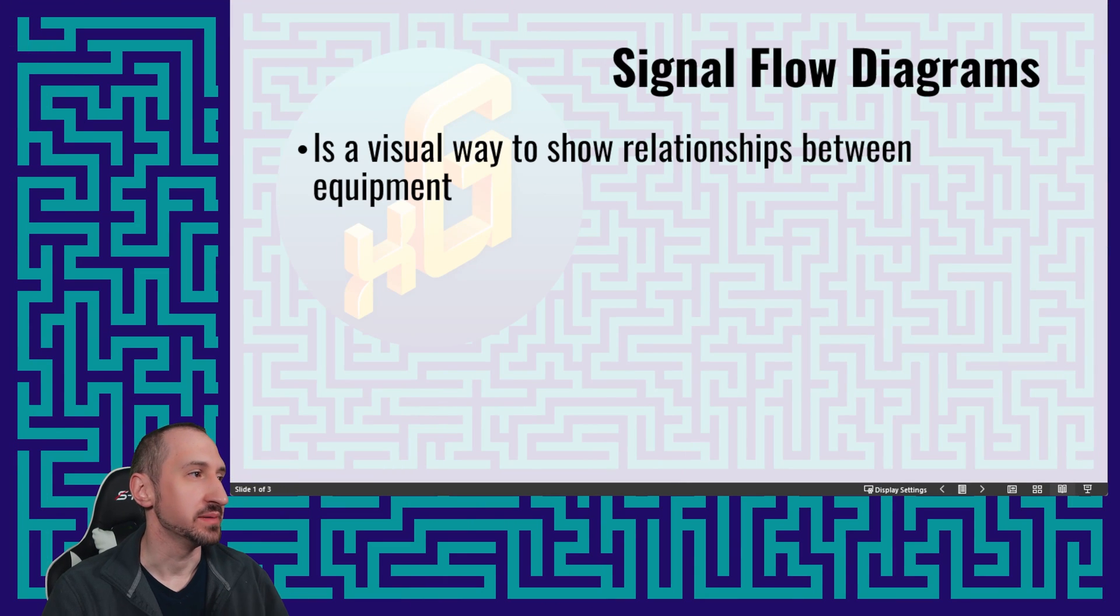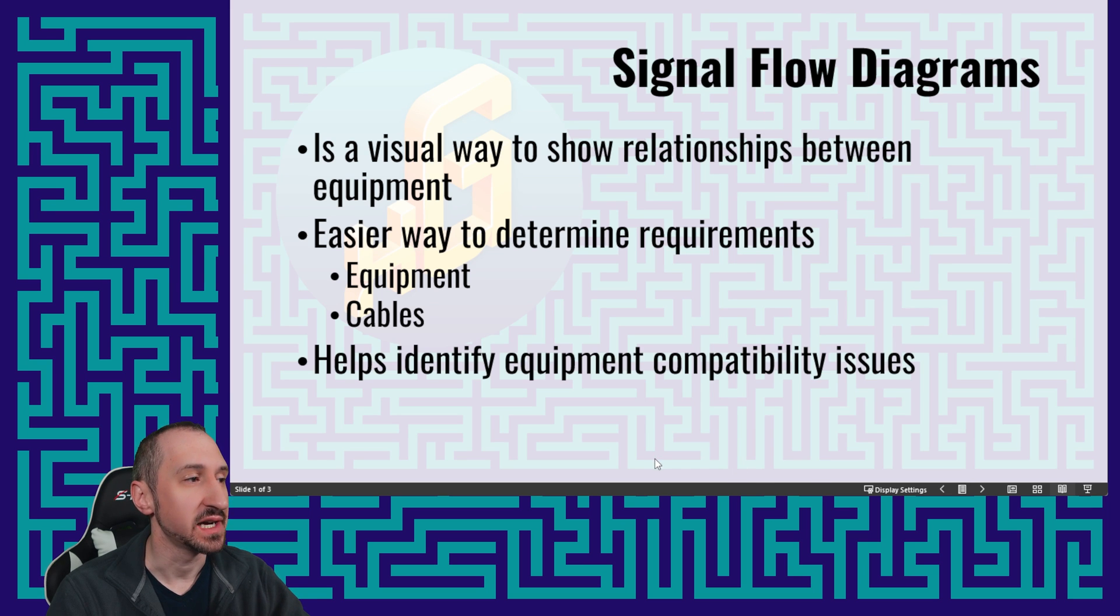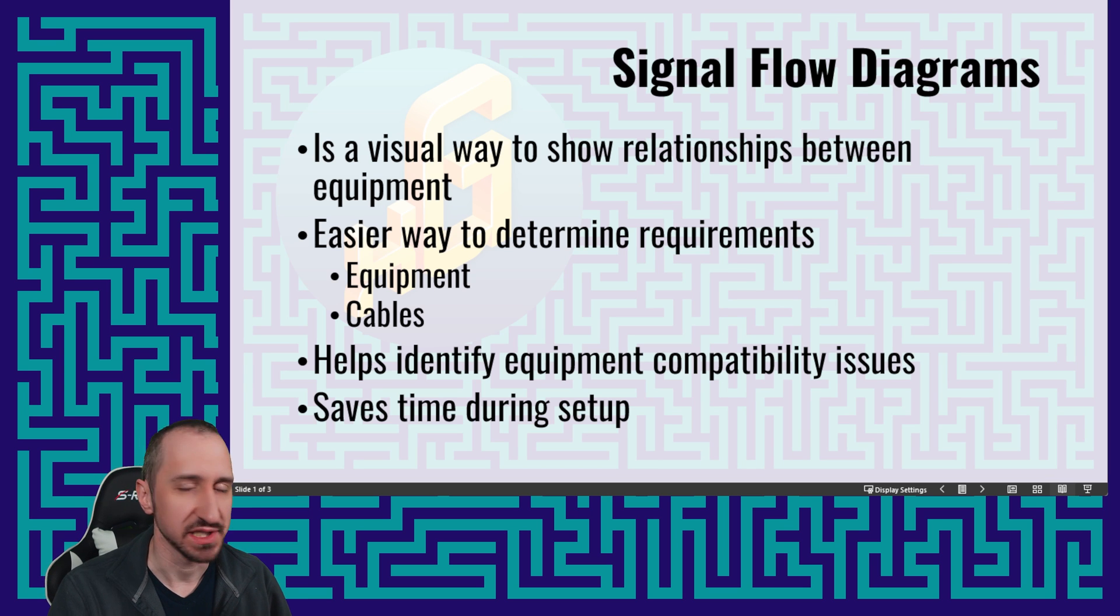So let's get into what it takes to create a signal flow diagram. A signal flow diagram is a visual way to show relationships between equipment. It's easier to determine requirements like equipment and cables, and it helps identify equipment compatibility issues. It can also save time during setup. You're able to go through and determine what inputs and outputs you have on particular pieces of equipment and see if they're compatible or if additional settings are needed. You have the opportunity to look through manuals during a time when you're not under a time crunch. Usually the time when you're setting things up is limited when you're on site, but you have time to do that thinking when you're creating the signal flow diagram itself.